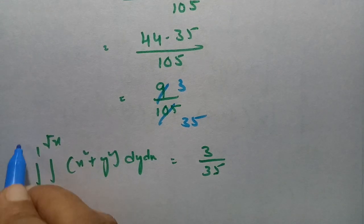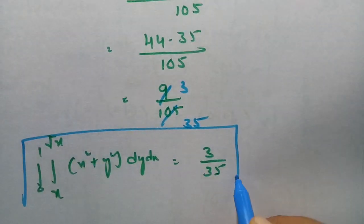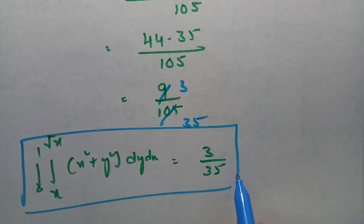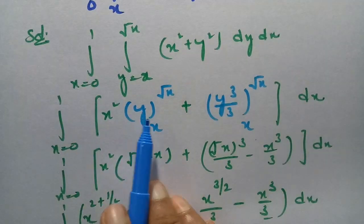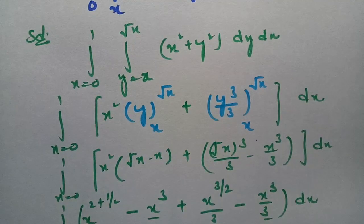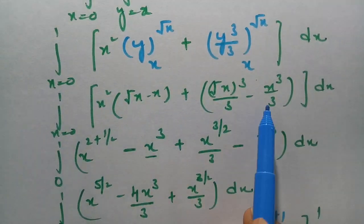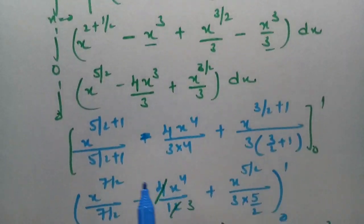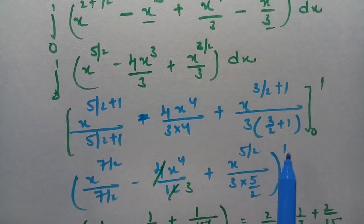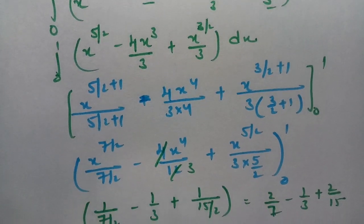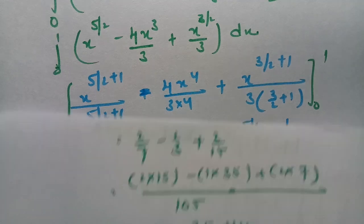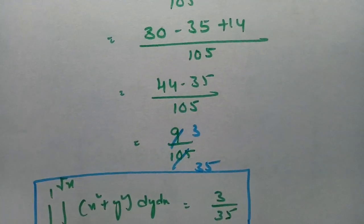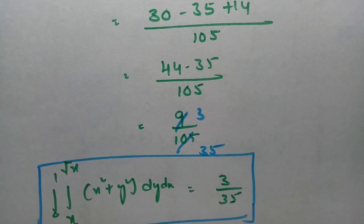To summarize: first I integrated with respect to y, substituted the limits, then integrated with respect to x and substituted the limits. After this calculation I got the answer as 3 by 35.